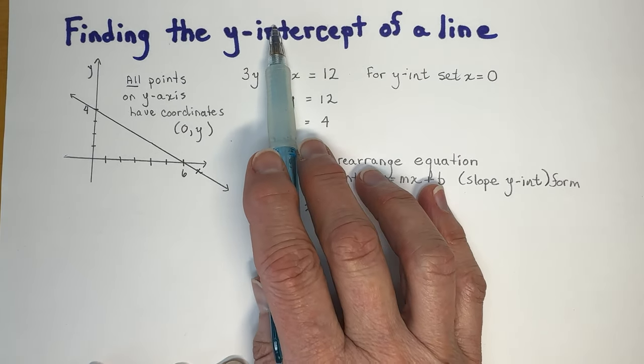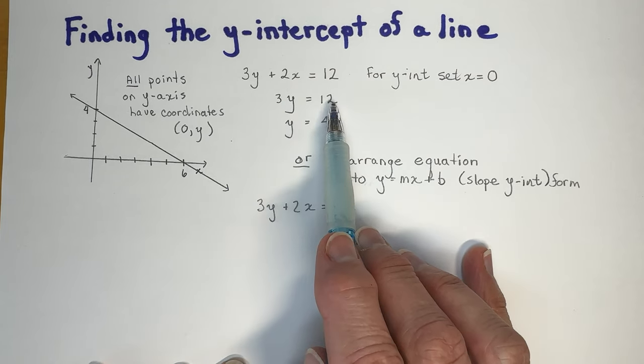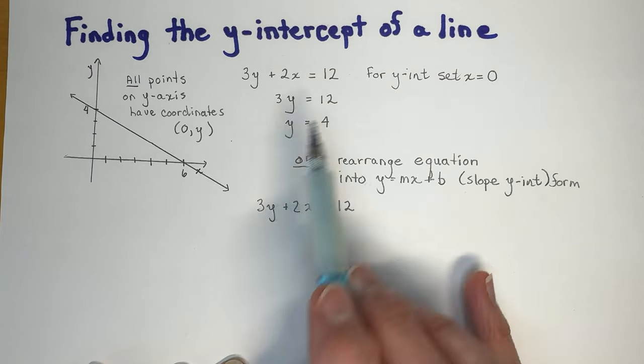If x equals 0, that means 2 times 0 is 0, and I'm left with a small equation, 3y equals 12. I divide by 3 and I get y equals 4.